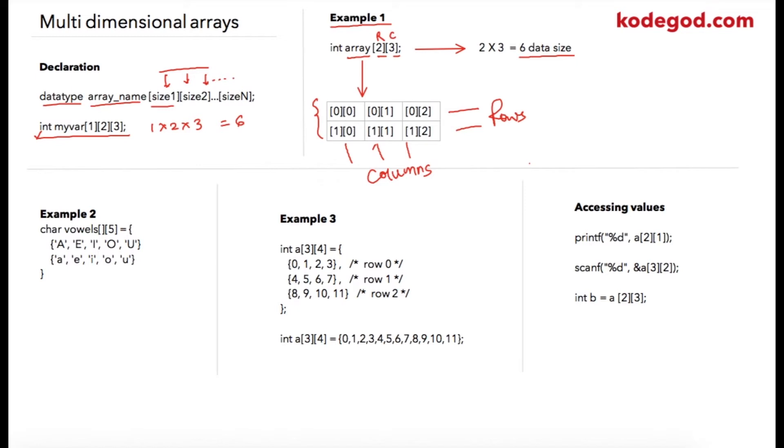If you declare an array of, let's say, int foo[5][3], then we are declaring 5 rows and 3 columns. So these are 5 rows and these are 3 columns.